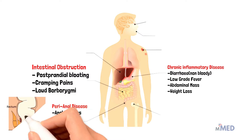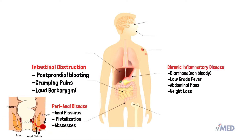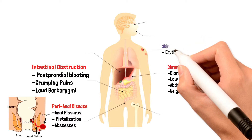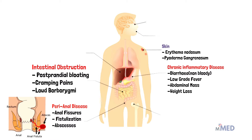Perianal disease is very common in Crohn's disease because the anus is affected — anal fissures, fistulization, and abscesses can occur. Patients with Crohn's disease can develop fistulization due to transmural inflammation, which can lead to epithelialization across the bowel wall. Fistulas are abnormal connections between two epithelialized surfaces; in this case, abnormal connections may form between the bowel and other organs.